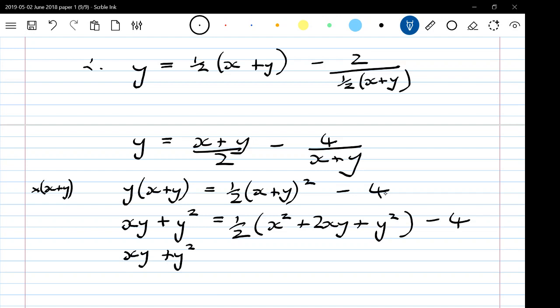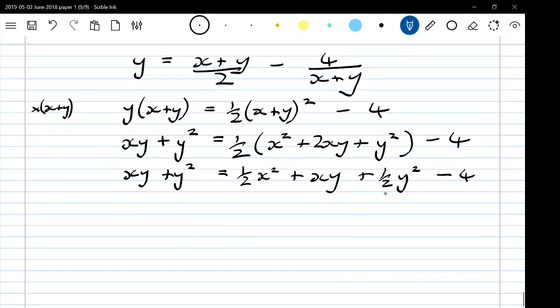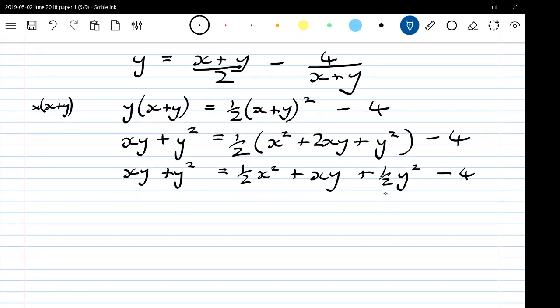So x plus y squared is half of x squared plus 2xy plus y squared take away 4. xy plus y squared is half of x squared plus xy plus a half of y squared take away 4. xy is a term on both sides of the equation, so we could subtract that from both sides. We've got y squared take away a half y squared, I think it gives me half y squared. Here's a half of x squared take away 4.